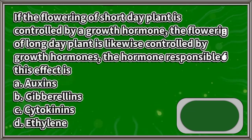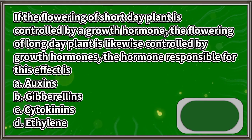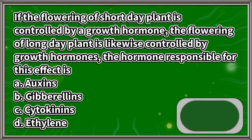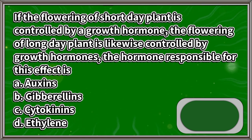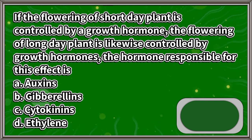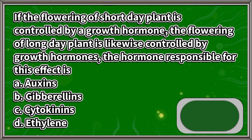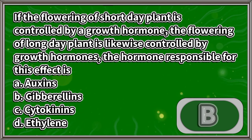If the flowering of a short-day plant is controlled by a growth hormone, the flowering of a long-day plant is likewise controlled by growth hormones. The hormone responsible for this effect is: A. Auxins, B. Gibberellins, C. Cytokinins, D. Ethylene. The answer is letter B.